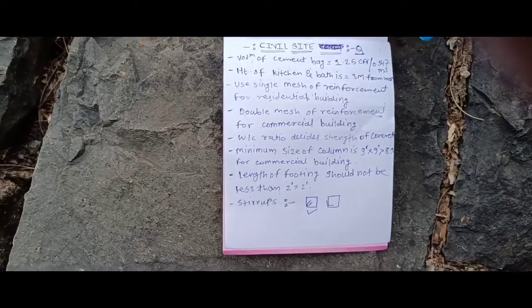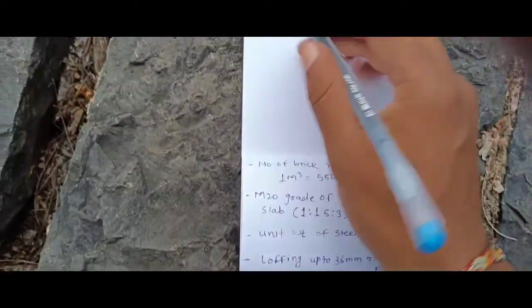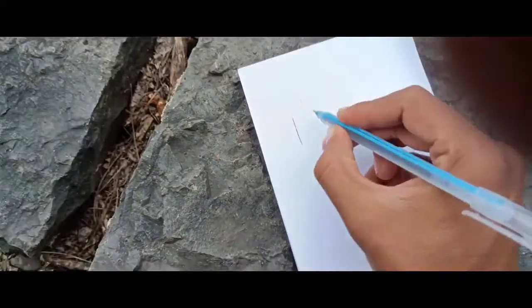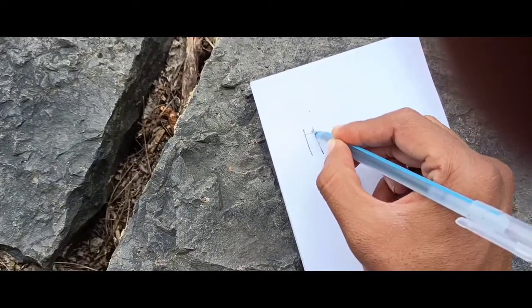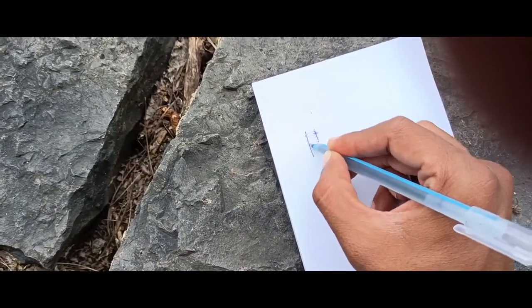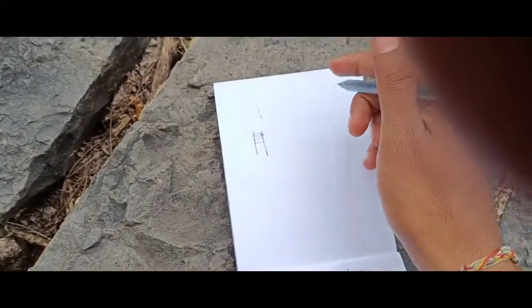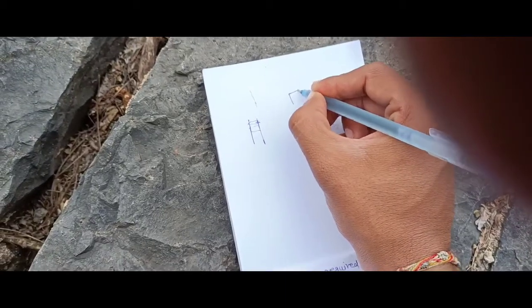Next is stirrups. Stirrups are the bars that go around the column's main reinforcement bars. They help hold the column bars in position and provide lateral support.